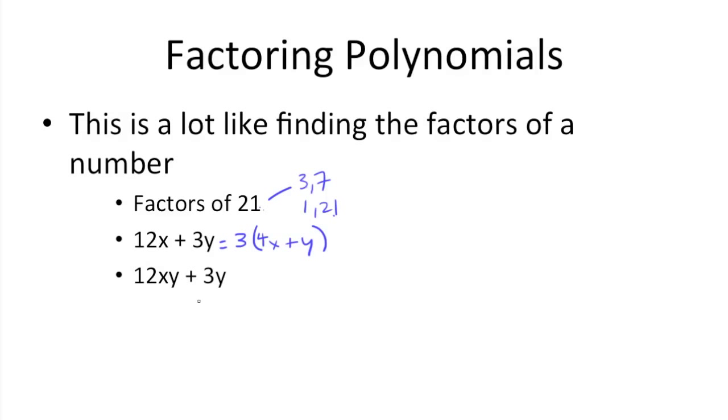The same can be said for this last example, 12xy plus 3y. What are some common terms? Well, they both share y's, and they both share 3's. So if you were to take 3y out of the first term, you'd be left with 4x. And at the end, 1, because 3y times 4x is 12xy, and 3y times 1 gets you 3y. So you're left with 3y times 4x plus 1.